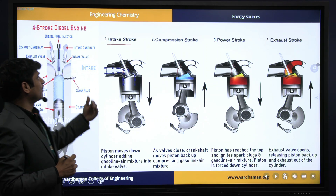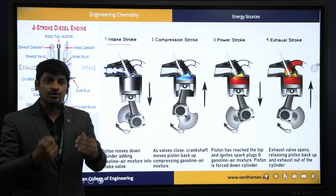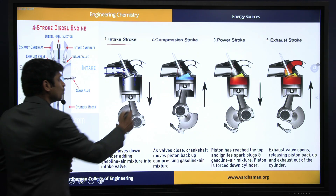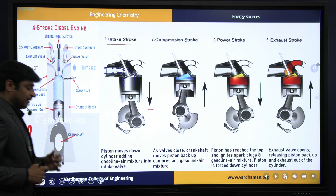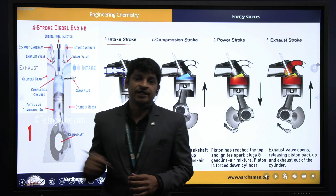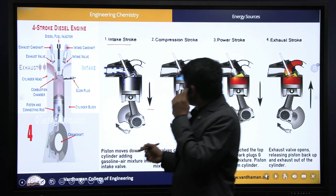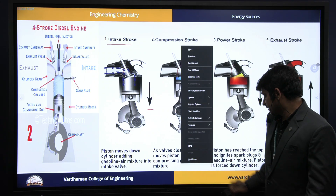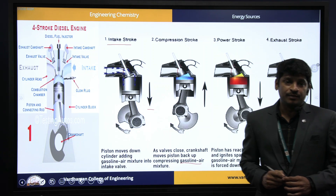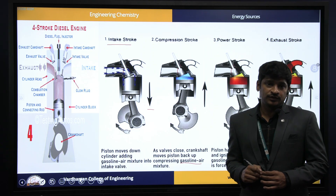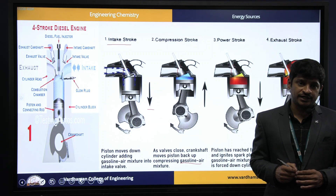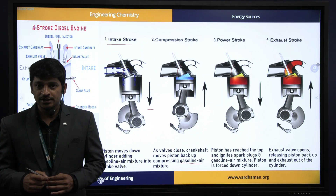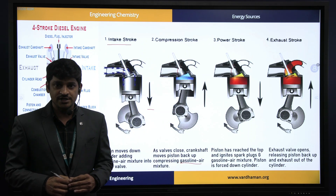The intake stroke involves intake of the fuel-air mixture into the engine cylinder; during this the piston moves down so that fuel and oxygen enter the cylinder. In the compression stroke the piston moves up and the fuel-air mixture is compressed. In the power stroke the piston moves down again and the ignition process occurs. In the exhaust stroke, after combustion, the products are sent out.